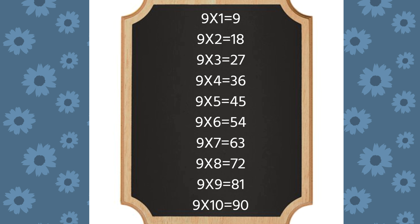Nine fives are forty-five. Nine sixes are fifty-four. Nine sevens are sixty-three. Nine eights are seventy-two. Nine nines are eighty-one. Nine tens are ninety.